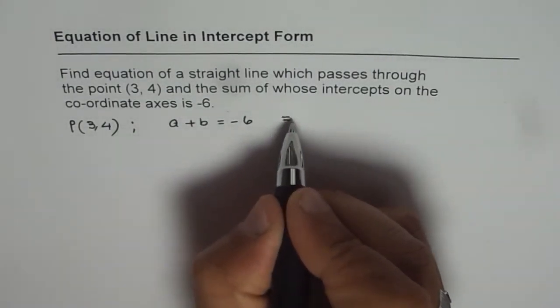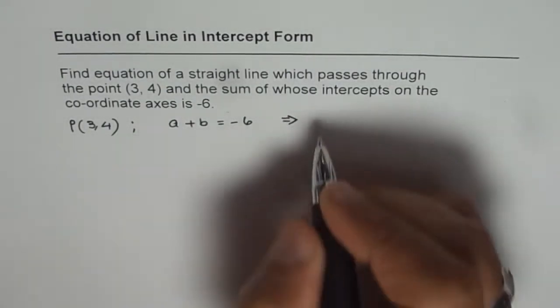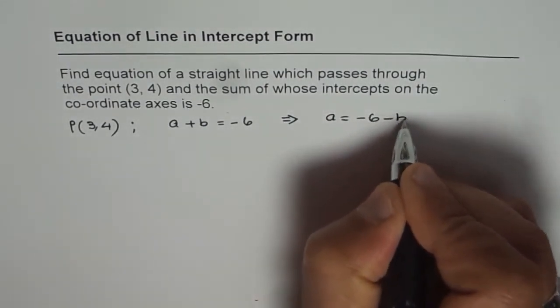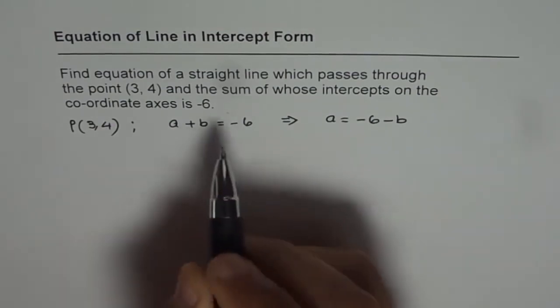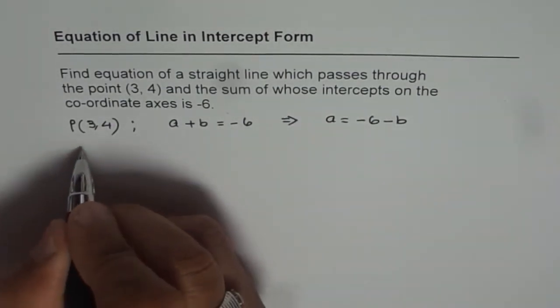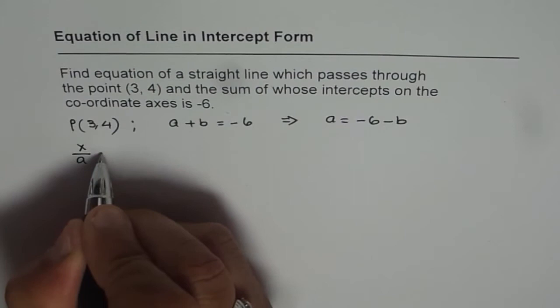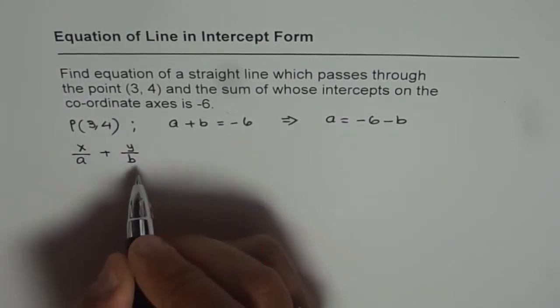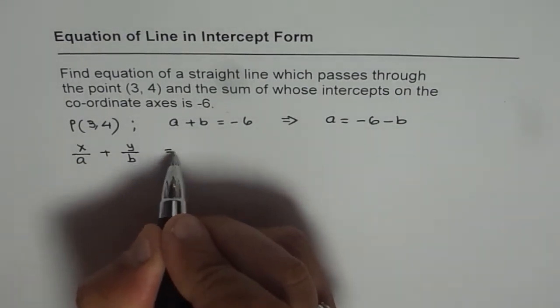From here we can write what a is in terms of b. We can say a = -6 - b. Equation of line in intercept form is x/a where a is the x intercept plus y/b where b is the y intercept equals 1.